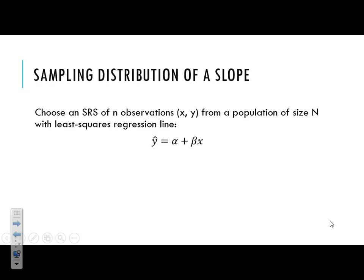We first need to understand the sampling distribution of slope. If we choose an SRS of n observations from a population, with a least squares regression line — thinking back to chapter 3 when we ran lines of regression, we took a sample of data, not every possible observation. If we worked with the entire population of data, that would follow a population regression line. In that equation, instead of variables A and B, we use alpha and beta — alpha representing our population y-intercept, and beta representing our population slope. Working with every observation gives us what's known as the true least squares regression line.